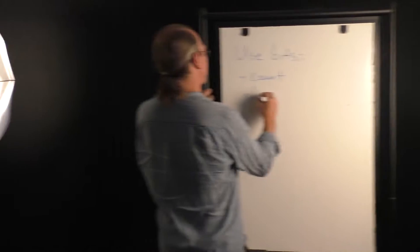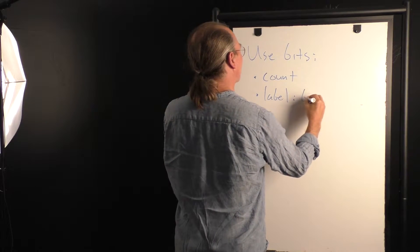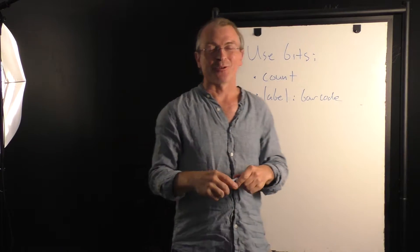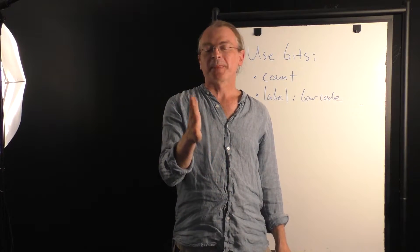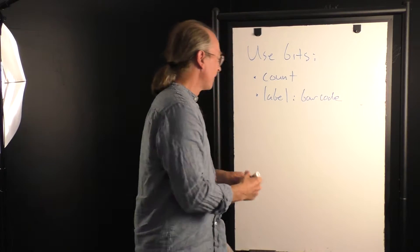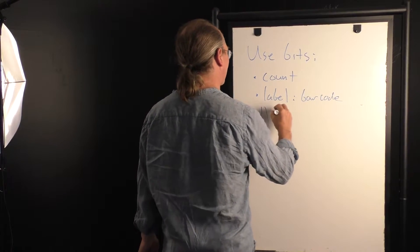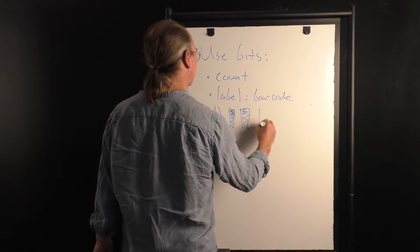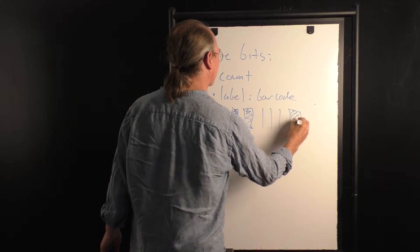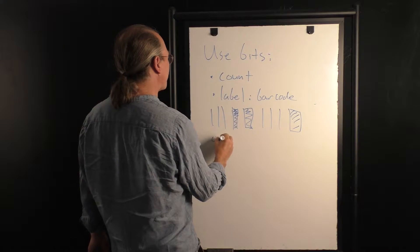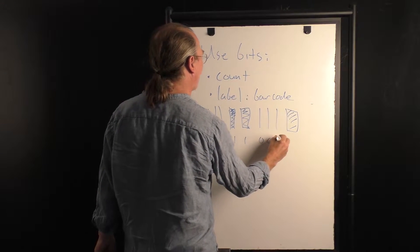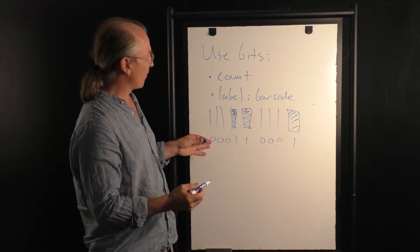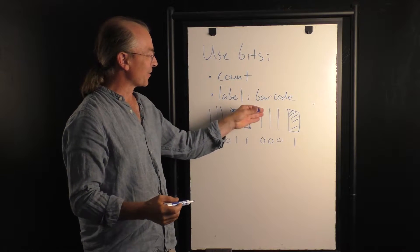But we can also label things. A good example of this is the barcode for things you buy in the supermarket. You've got a little barcode. If you look at barcodes, it's a series of lines — a bunch of narrow lines, and then some thicker lines in between. The idea is that each narrow line is a 0 and each thicker line is a 1. So this barcode I drew for you is a barcode that says 0, 0, 0, 1, 1, 0, 0, 0, 1.